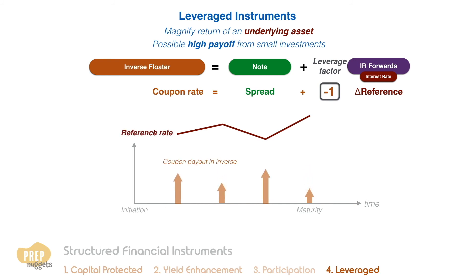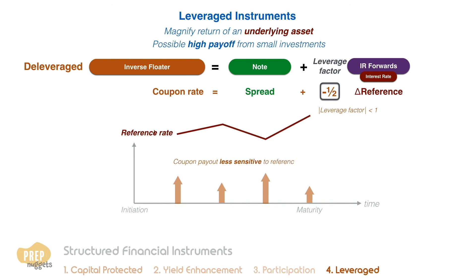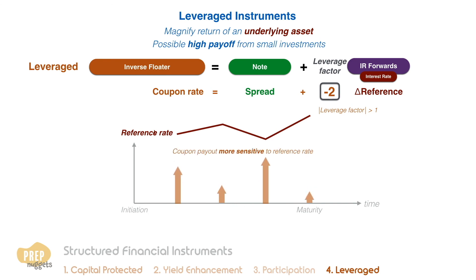The cash flows move in the opposite direction of changes in the reference rate. So when the reference rate decreases, the coupon payment of an inverse floater increases. If the magnitude of the leverage factor is less than 1, the inverse floater is called a deleveraged inverse floater, and the coupon payouts are less sensitive to changes in the reference rate. Conversely, if the magnitude of the leverage factor is greater than 1, the inverse floater is called a leveraged inverse floater, and the coupon payouts are more sensitive to changes in the reference rate.